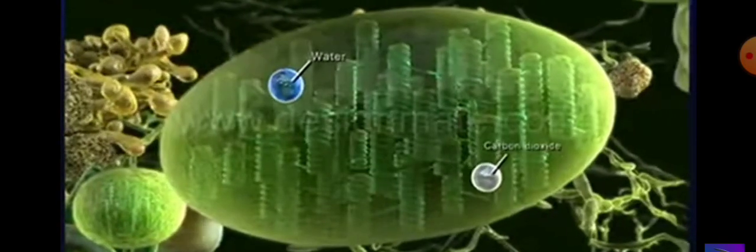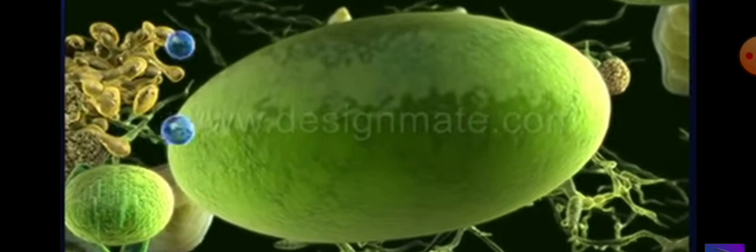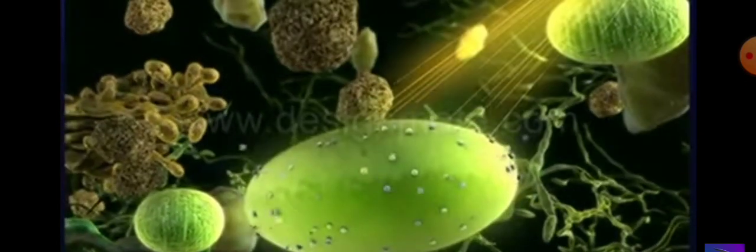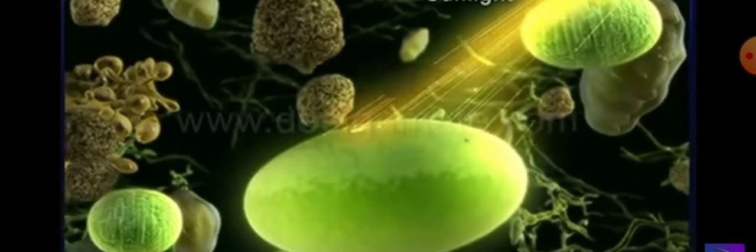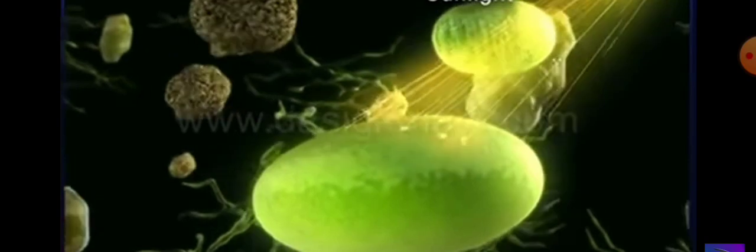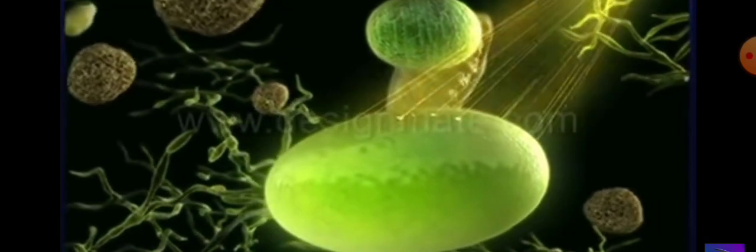Both water and carbon dioxide molecules are finally absorbed by the chloroplasts. These chloroplasts also have the capacity for trapping energy from sunlight. And this energy is used to synthesize glucose and oxygen from carbon dioxide and water.